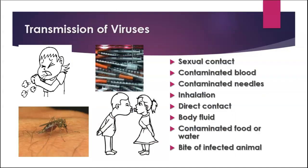How do viruses get transmitted? We know a lot more about this now than we used to. There are viruses transmitted by sexual contact, by contaminated blood or needles, by inhalation, and by direct contact — touching something can transfer a virus to you. Various kinds of body fluids, contaminated food or water, and the bite of an infected animal are also transmission routes. We're very familiar with inhalation and direct contact because that's what we think about now as we protect ourselves from the coronavirus.